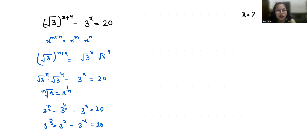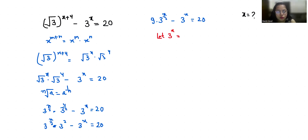This becomes 3 power x by 2 times 3 power 2 minus 3 power x equals 20. Since 3 squared is 9, we have 9 times 3 power x by 2 minus 3 power x equals 20. Now we use substitution: let u equal 3 power x by 2, so u squared equals 3 power x.